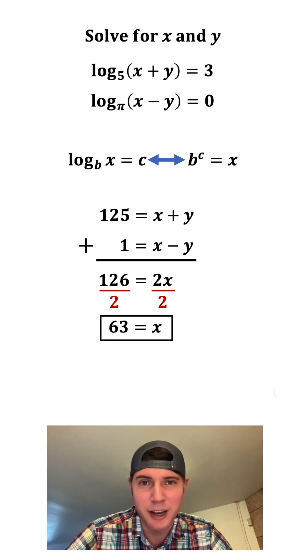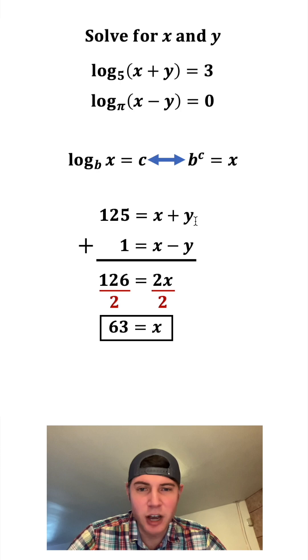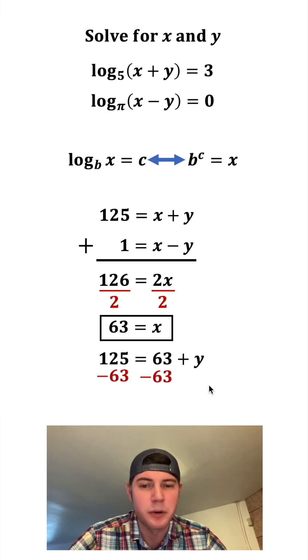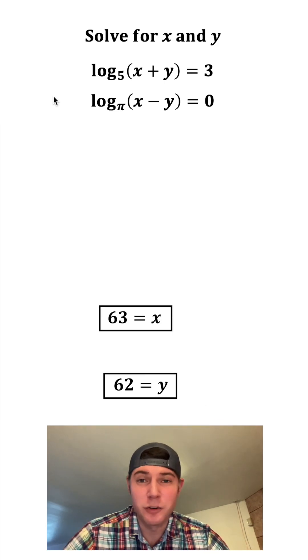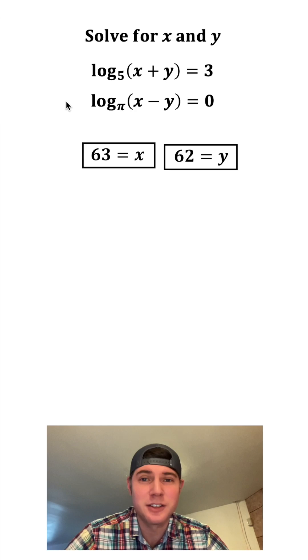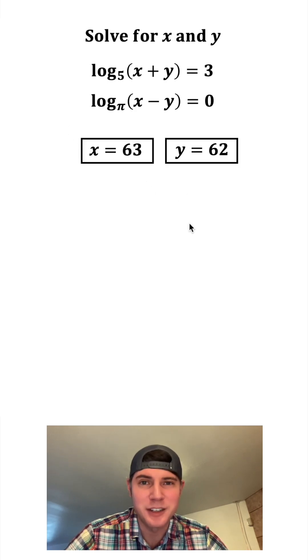Now we can put a box around that. Now to solve for y, we can take this top equation, plug in 63 for x, subtract 63 from both sides, and we get y is equal to 62. So for this system of logarithmic equations, x is equal to 63 and y is equal to 62.